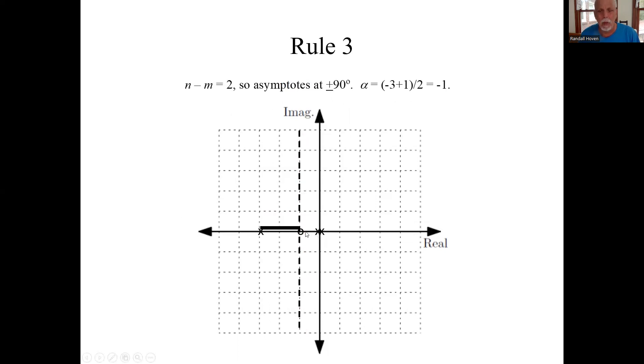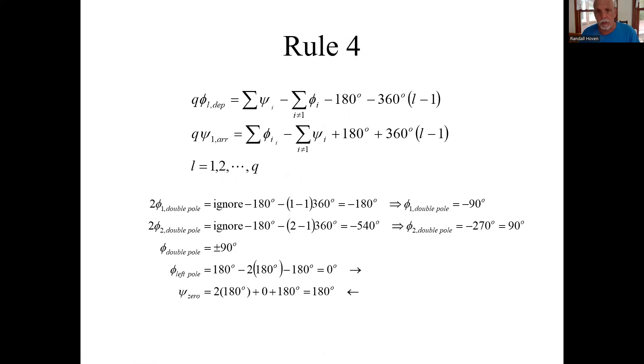We can be sure the root locus doesn't cross the imaginary axis into the right half plane. Why? Because what attracts the root locus are zeros and asymptotes. They're all in the left half plane and they start at most right on the imaginary axis. So there's nothing drawing the root locus to the right. Everything's drawing it to the left.